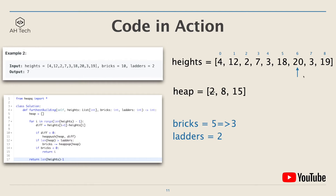We need to start using bricks. We pop the smallest height difference from the heap, which is 5, and subtract it from bricks — bricks become 5. At index 6, the height difference is 20 minus 18 = 2, so we add it into the heap. Again we have to use bricks, so we subtract 2 from bricks and it becomes 3.